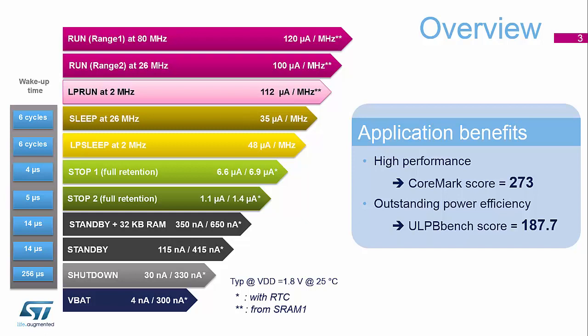Here's an overview of all the different power modes available on the STM32L4. We have two run modes: range one, which has the capability of running up to the full speed of 80 megahertz, and range two, which limits the top speed to 26 megahertz. As you can see, we get better dynamic current consumption in range two — 26 megahertz is the optimal current consumption point for this particular technology.